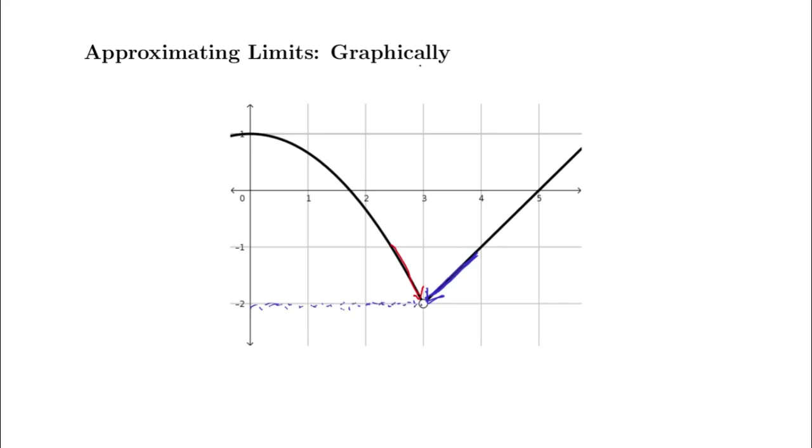What I like to do is sketch those arrows on here, because drawing all those individual points can be cluttery. If we just draw the arrows, we can see it looks like we're approaching the y value at negative 2. So my best guess is that the left-sided limit and the right-sided limit are both negative 2.